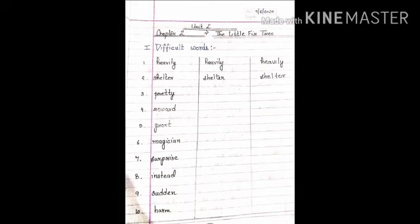Now we will start with the notebook work. First of all, you will start your work with writing a date, chapter number, chapter name and then you will write the first heading which is difficult words. First of all, you will copy the difficult words and then you will write twice in the columns adjacent to the words.